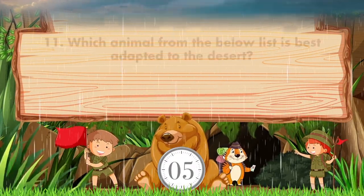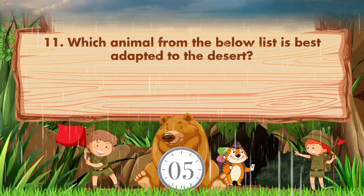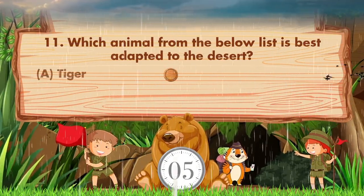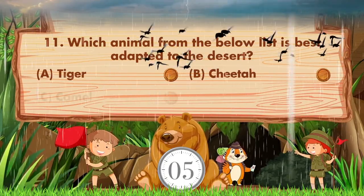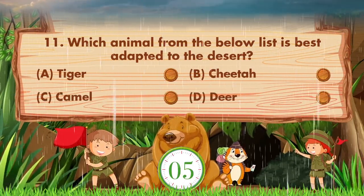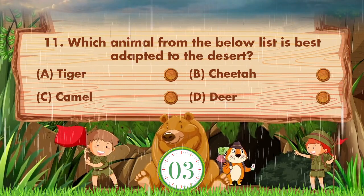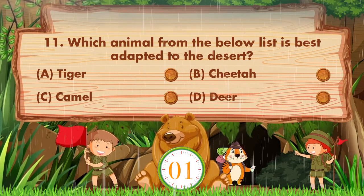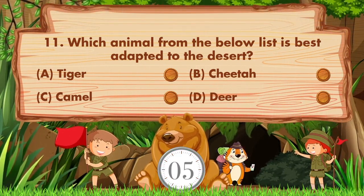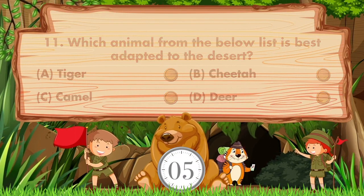Which animal from the list below is best adapted to the desert? Option A tiger, B cheetah, C camel, D deer. Sorry, we don't know the answer — if you know the answer, then like the video!